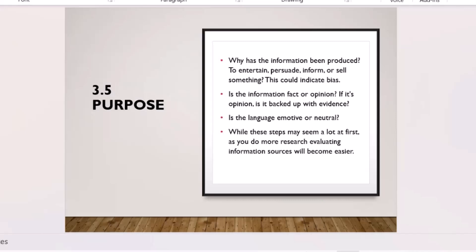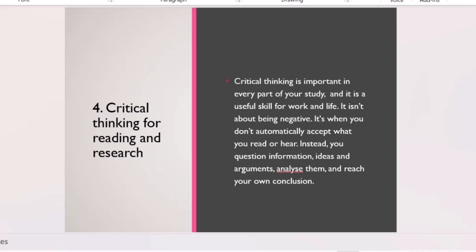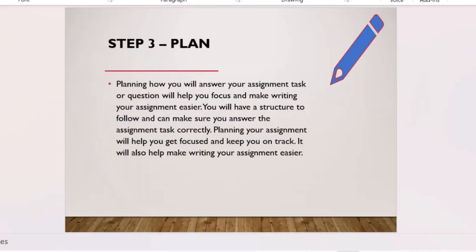Academic sources are neutral, factual, and non-emotional — they focus on informing readers about a specific topic. After using the CRAAP test, also think critically about the text: Is it relevant? Can you understand the arguments? Can you draw your own conclusions? Can you analyze it? Once you're satisfied with the sources, start planning your assignment.